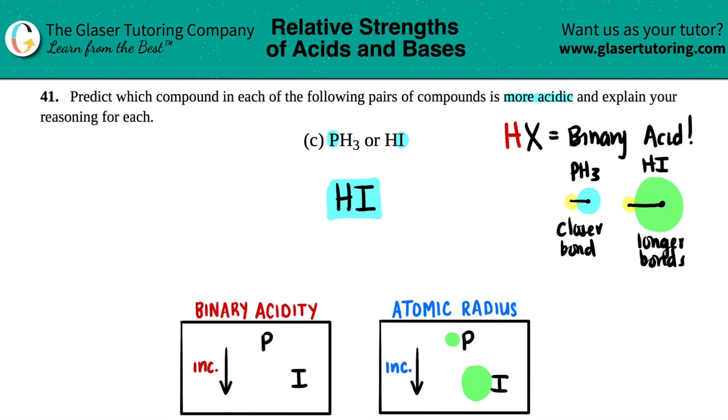Is that the bigger the radius, not as much attachment is going on between the two elements, and it makes the hydrogen easier to be donated, aka lost. So it's because iodine has a larger radius, and because iodine has the larger radius, it doesn't have a strong bond with hydrogen.